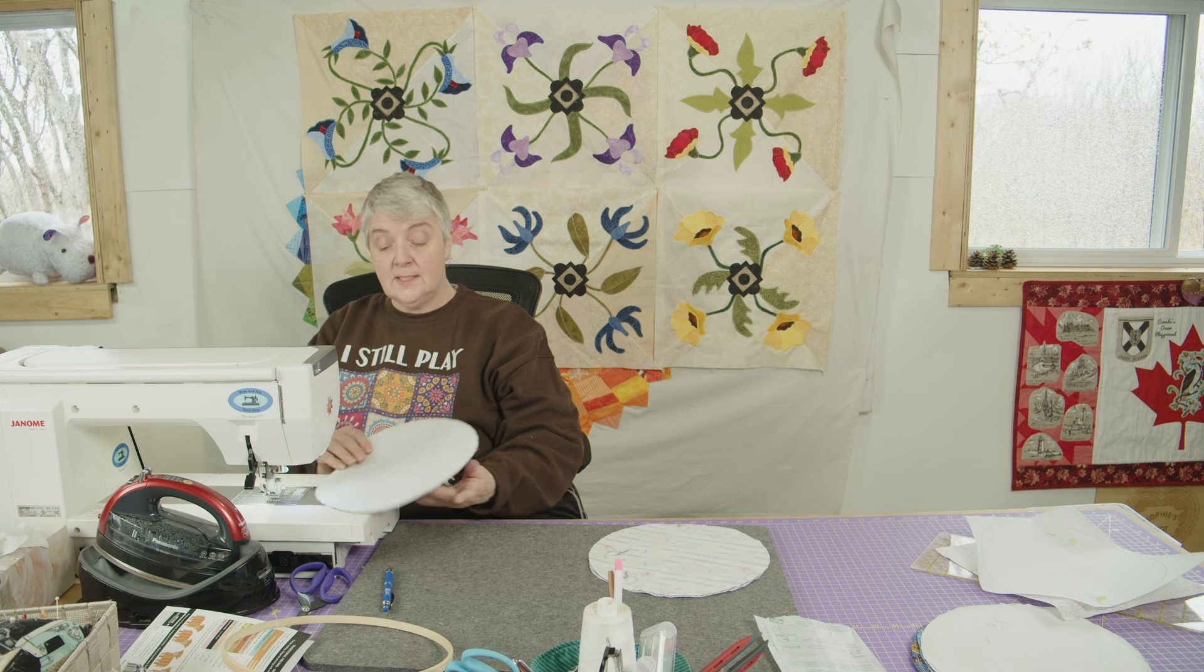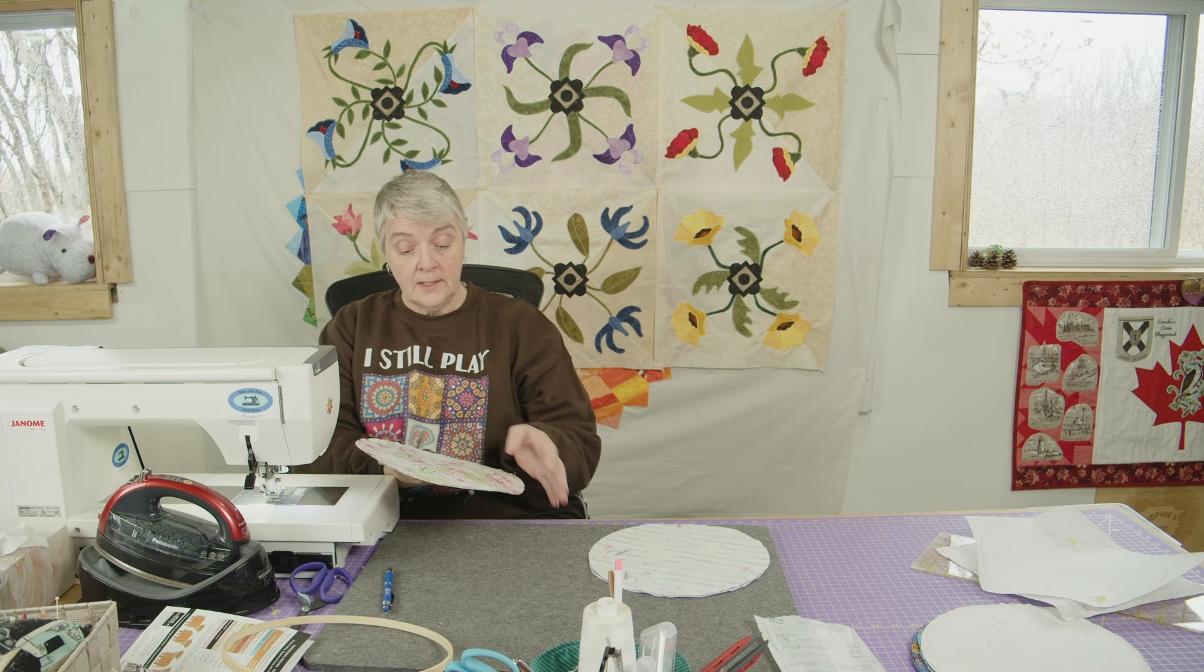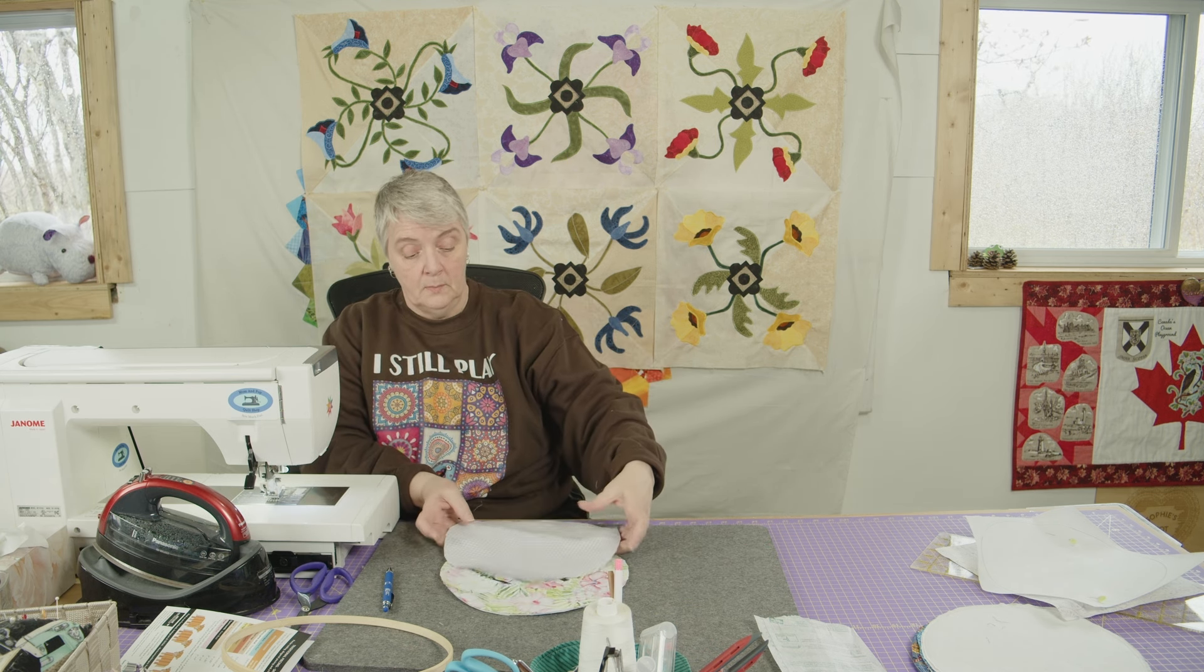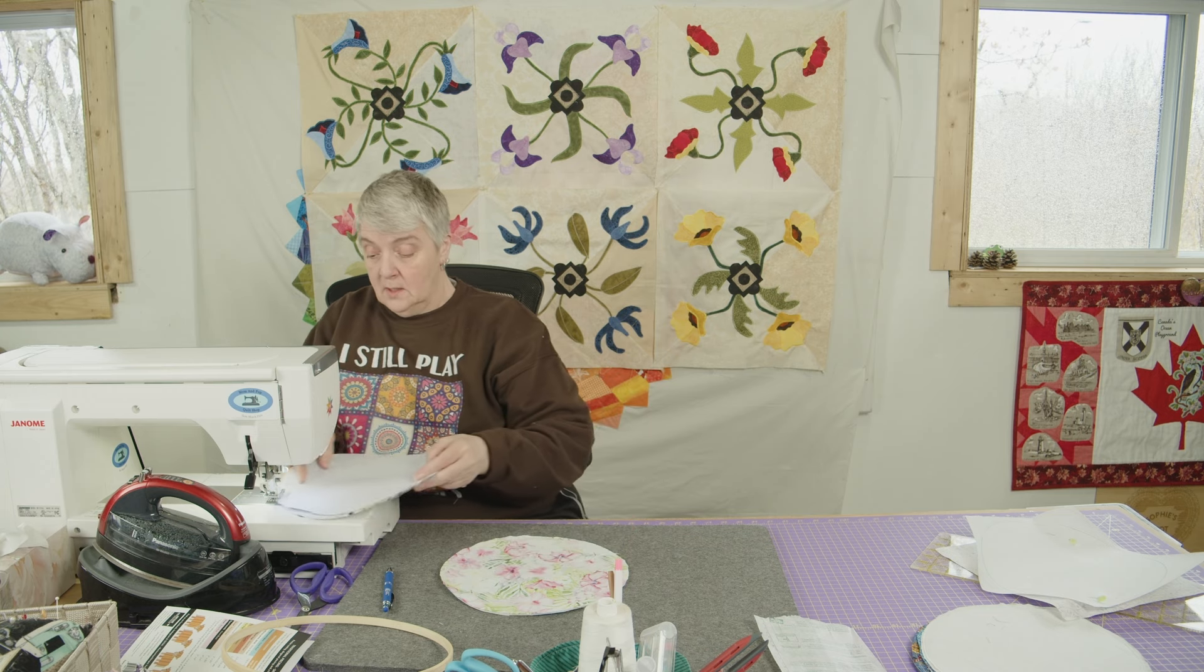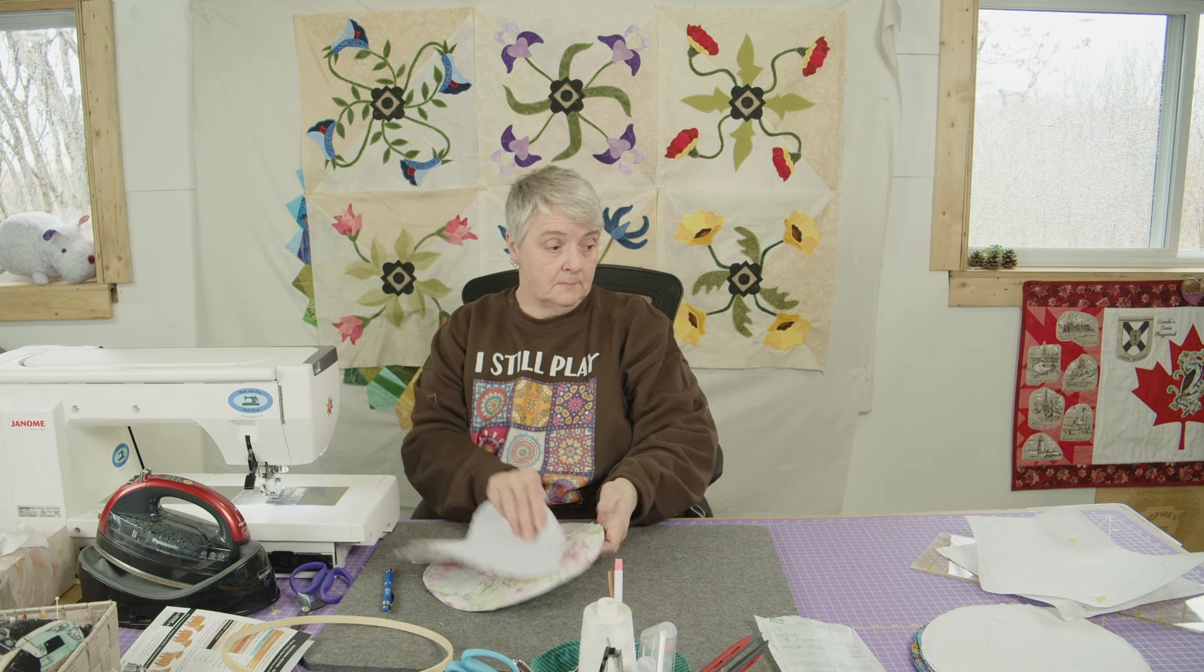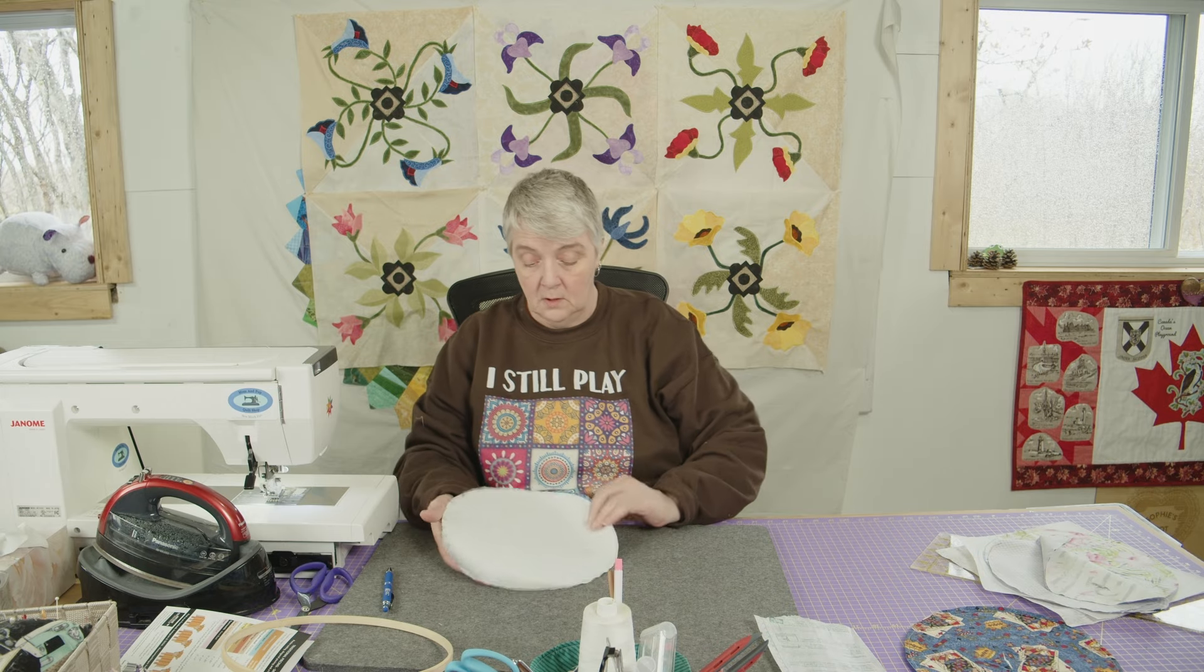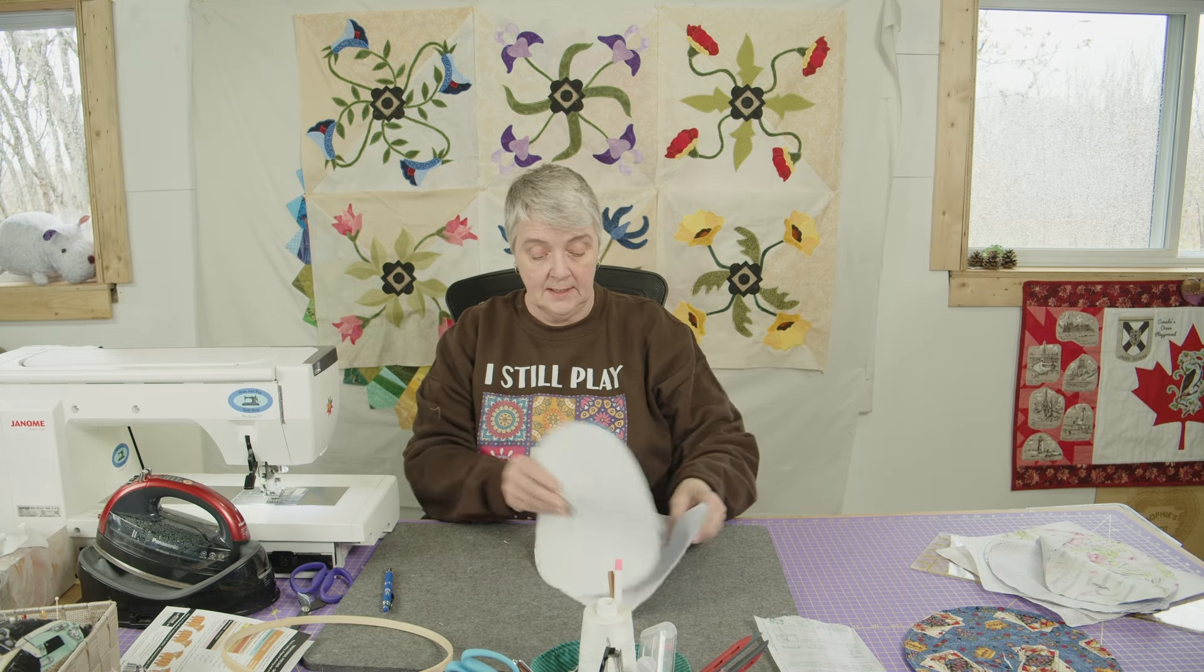So you want to do that for the two. So the one piece has the stabilizer on it and one has just the two bits of fabric together. So once you get those two done, you're going to have two pieces like this.